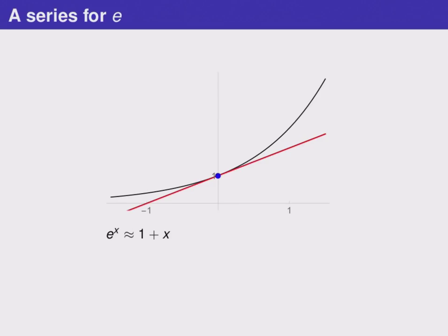We can use this to approximate the value of e. If we substitute x equals 1 into both sides of this approximate equality, we get e on the left and an estimate for it, 1 plus 1, on the right. We've plotted these two values on the curve. The black dot is the location of the exact value of e — its y value is e because it's on the function e to the x. The red dot is the approximation given to us by this tangent line. You can see that they're not particularly close together because we're not close to the point of tangency — that's the local part of a local linear approximation. So although we can get an estimate for e, it's not particularly good.